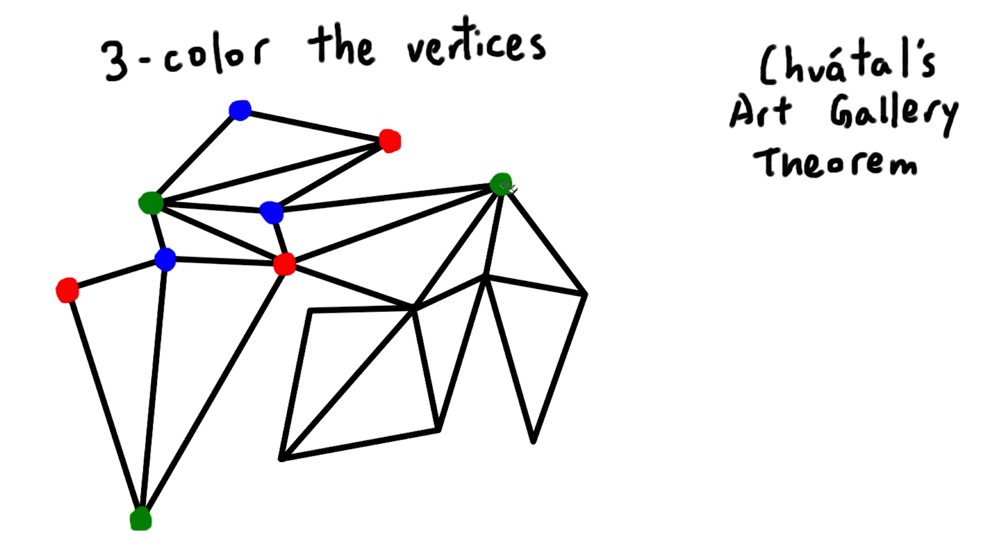Hopefully this gives you some intuition as to why we can three-color the vertices in this way, and if you try it yourself, it'll make more sense. Anyway, the rest is smooth sailing, we just count the vertices.